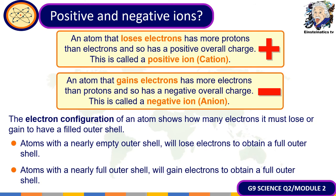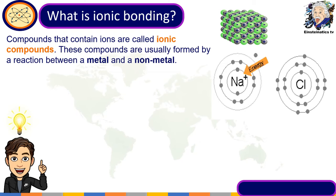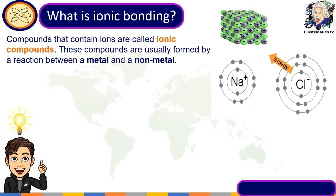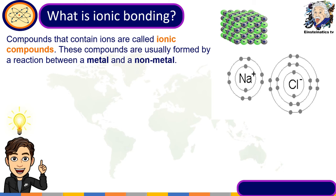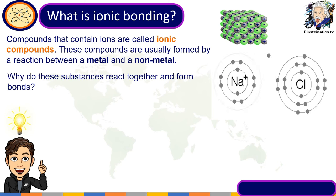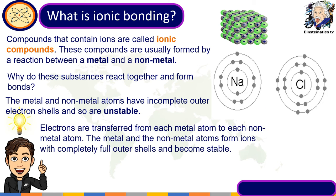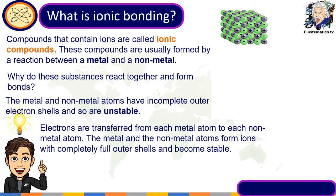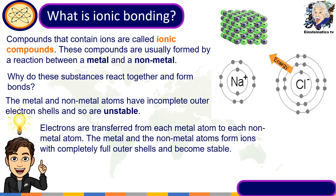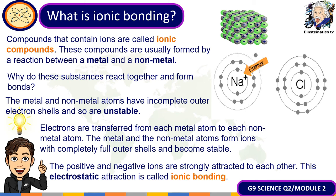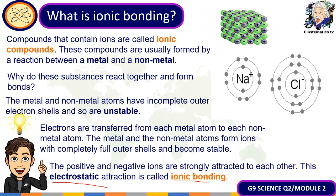Now that we know how ions are formed, let's define ionic bonding. Ionic compounds are formed between a metal and a non-metal. Metals and non-metals both have incomplete outer electron shells, so they are unstable. Electrons are transferred from each metal atom to each non-metal atom, and both atoms form ions with complete outer shells and become stable. The positive and negative ions are strongly attracted to each other, and this electrostatic attraction is called ionic bonding.